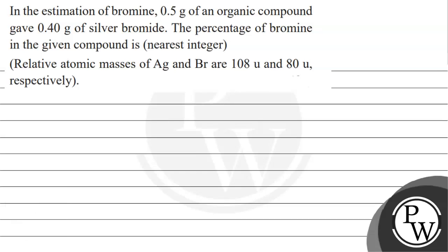Let's read this question. The question says: estimation of bromine — 0.5 gram of organic compound gave 0.40 gram of silver bromide. The percentage of bromine in the given organic compound is, nearest integer. Relative atomic masses of silver and bromine have been given as 108u and 80u respectively.